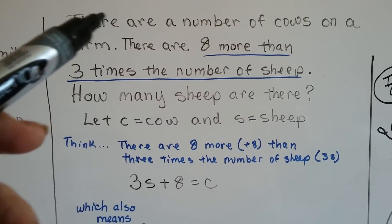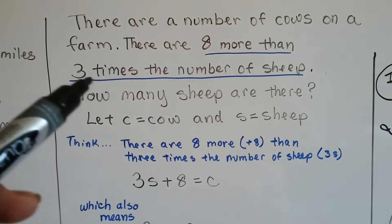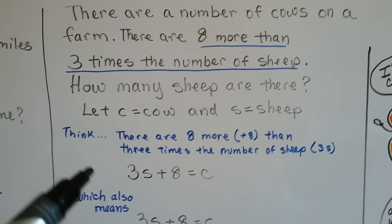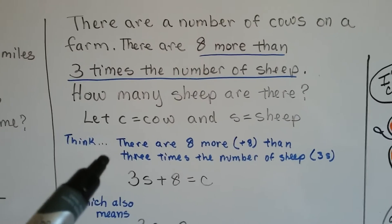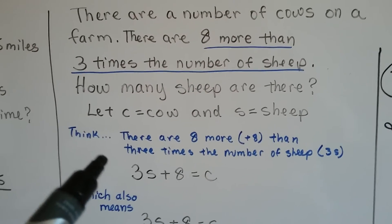Now we don't know how many cows there are. All we've got is that there's eight more than three times. So that's telling me we're probably not going to come up with a numerical answer on this one. It's probably going to be an equation answer.